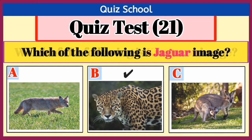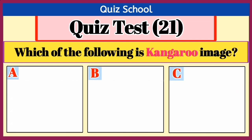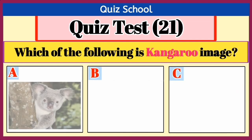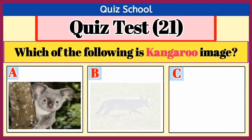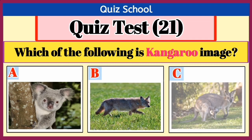Question number 12. Which of the following is the kangaroo image? Option A, Option B, or Option C. Right answer is Option C.